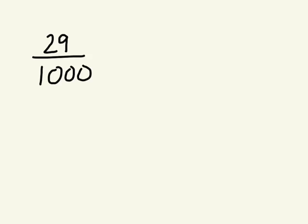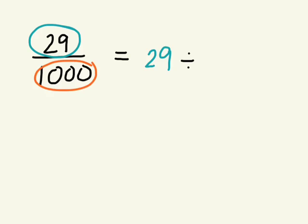If we want to turn this into a decimal, when you convert fractions into decimals, you're actually taking the numerator, which is the top number, and you're dividing it by the denominator, which is the bottom number. So what you're actually doing is 29 divided by 1,000.